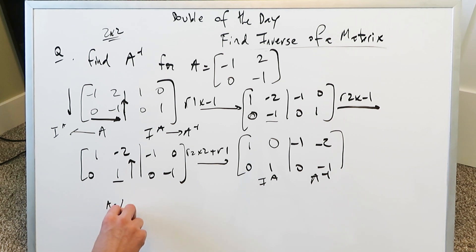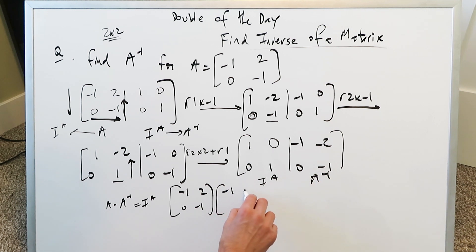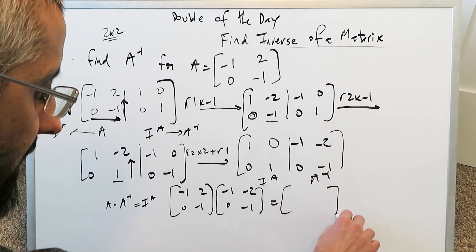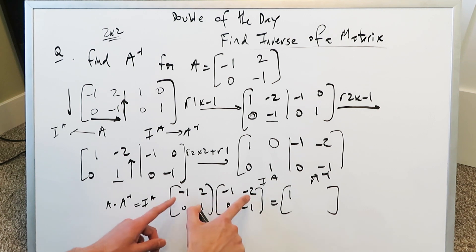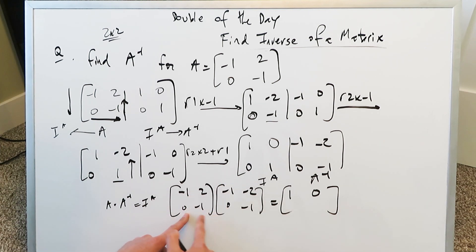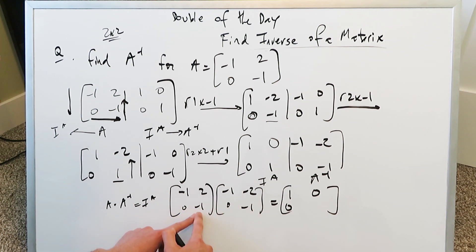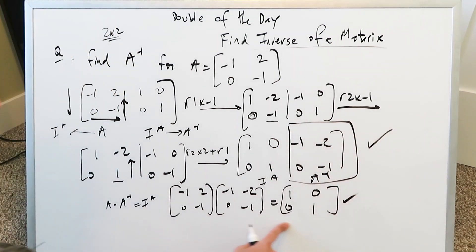Let's do the quick check: A times the inverse should equal the identity matrix. We have the original minus one, two, zero, minus one, multiplied by the inverse minus one, minus two, zero, minus one. First row, first column: minus one times minus one plus zero is one. First row, second column: minus one times minus two plus two times minus one equals two minus two equals zero. Second row, first column: zero and zero, giving zero. Second row, second column: zero times minus two plus minus one times minus one equals one. We're getting the identity matrix, so our answer is confirmed.